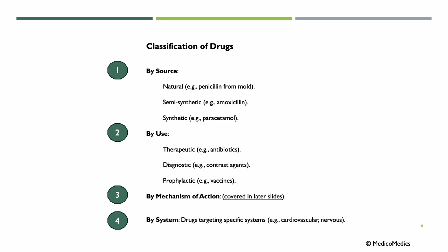We typically classify drugs by four main criteria: by source, by use, mechanism of action, or by system. If we talk about source — natural drugs are derived directly from natural sources such as plants, microorganisms, or animals without significant chemical modification, like penicillin from mold. Semi-synthetic drugs, like amoxicillin, are initially derived from natural sources but chemically modified in the laboratory to enhance properties such as increased efficacy or reduced side effects.